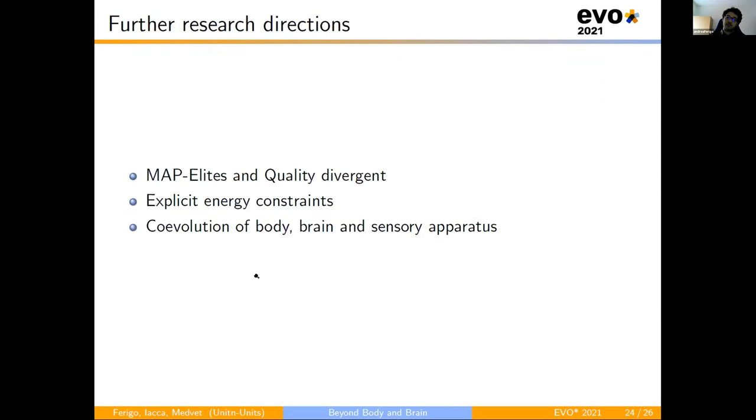So, what can be added as further directions from this? Well, the first can be implementing map-elites and quality divergent algorithms to better explore the solution space. Another can be to add an explicit energy constraint, so each sensor costs an amount of energy and the body has a total budget of energy. And lastly, can be the co-evolution of all the three elements of the robot: the body, the brain, and the sensory apparatus. And for example, we can start the evolution with the worm with the low configuration and then with the biped with the high configuration.